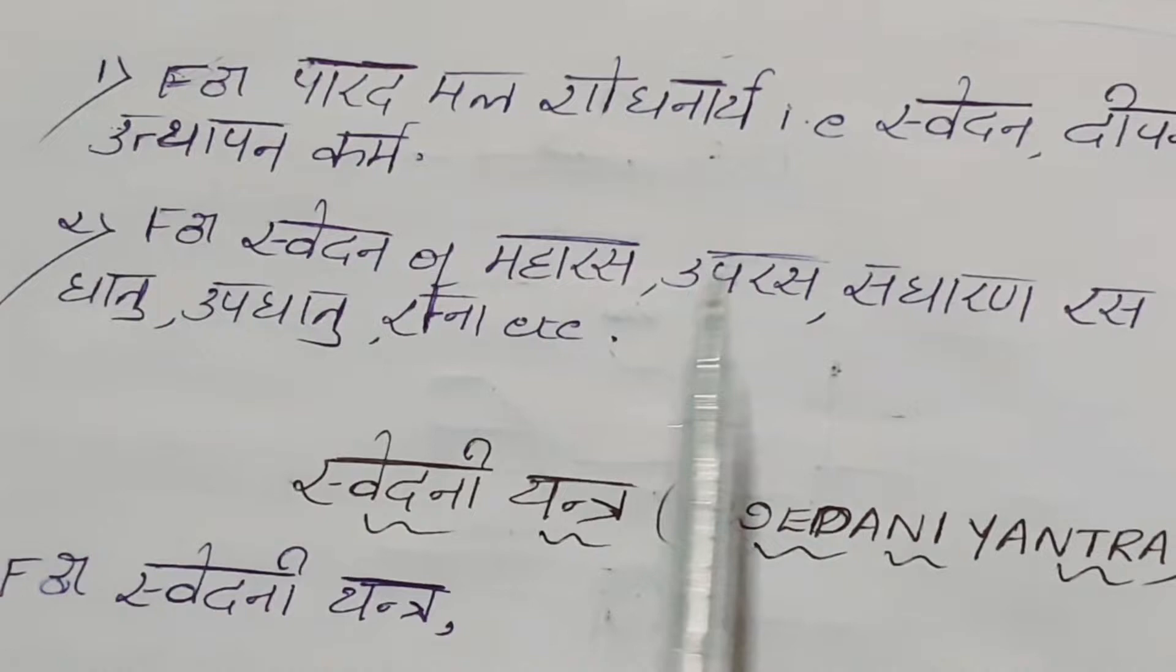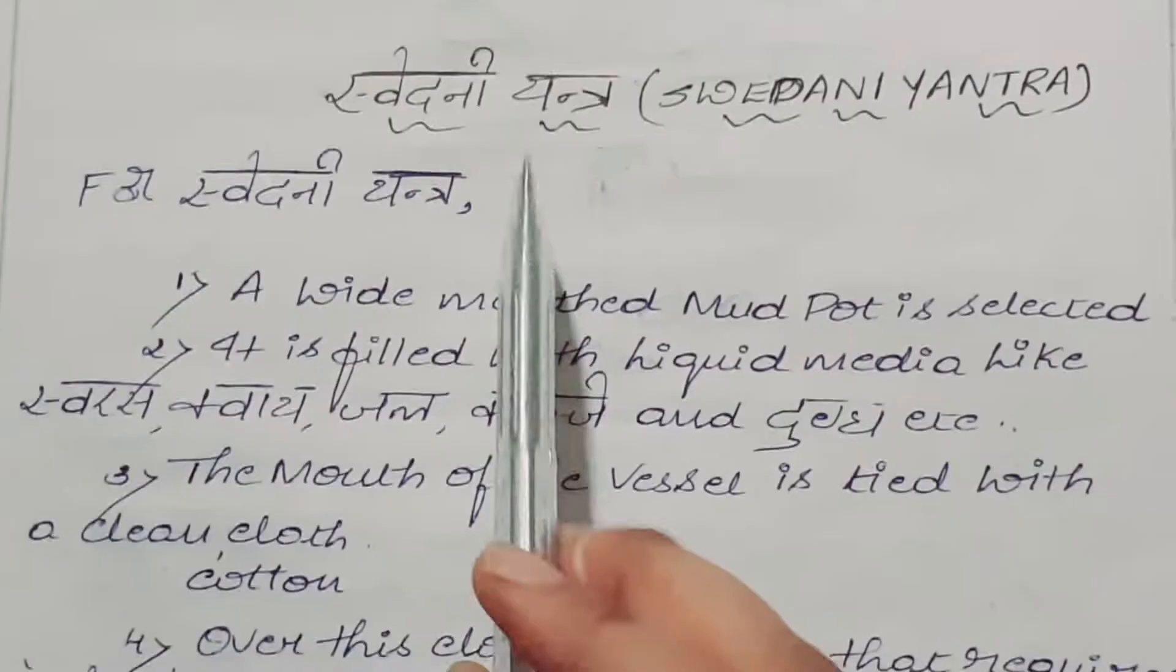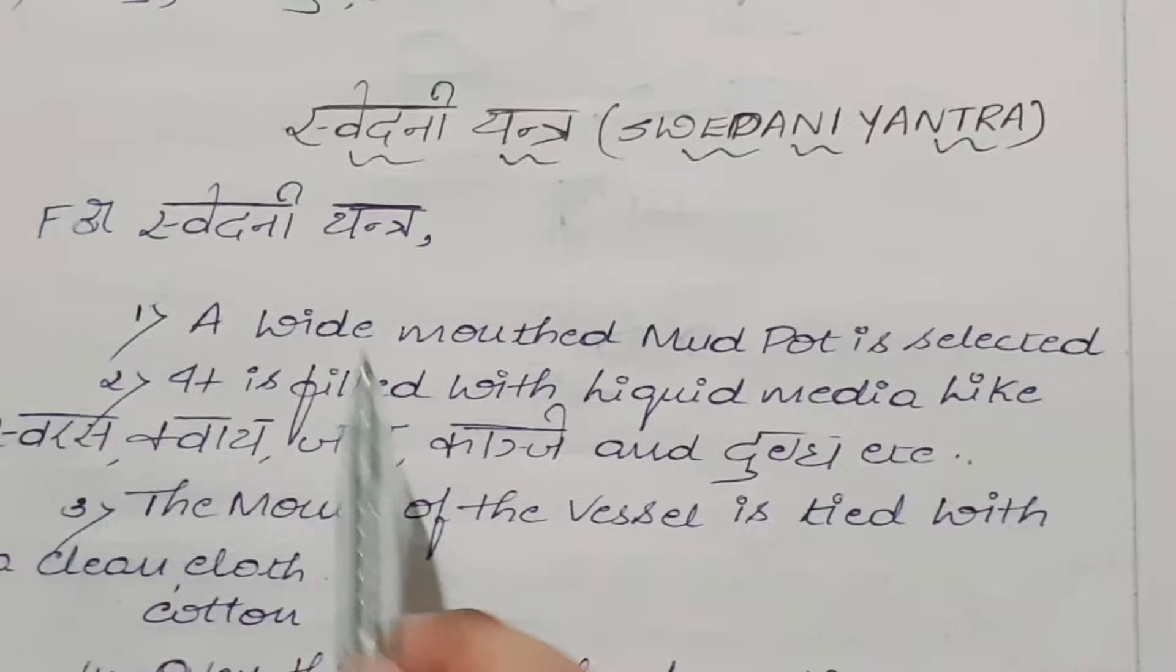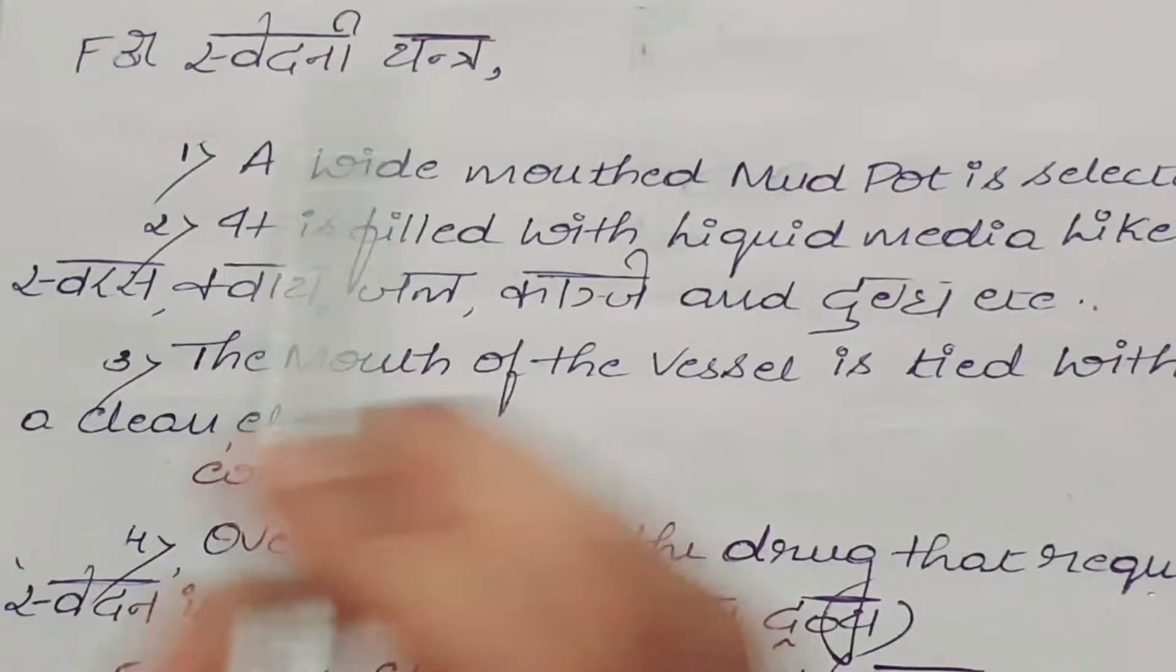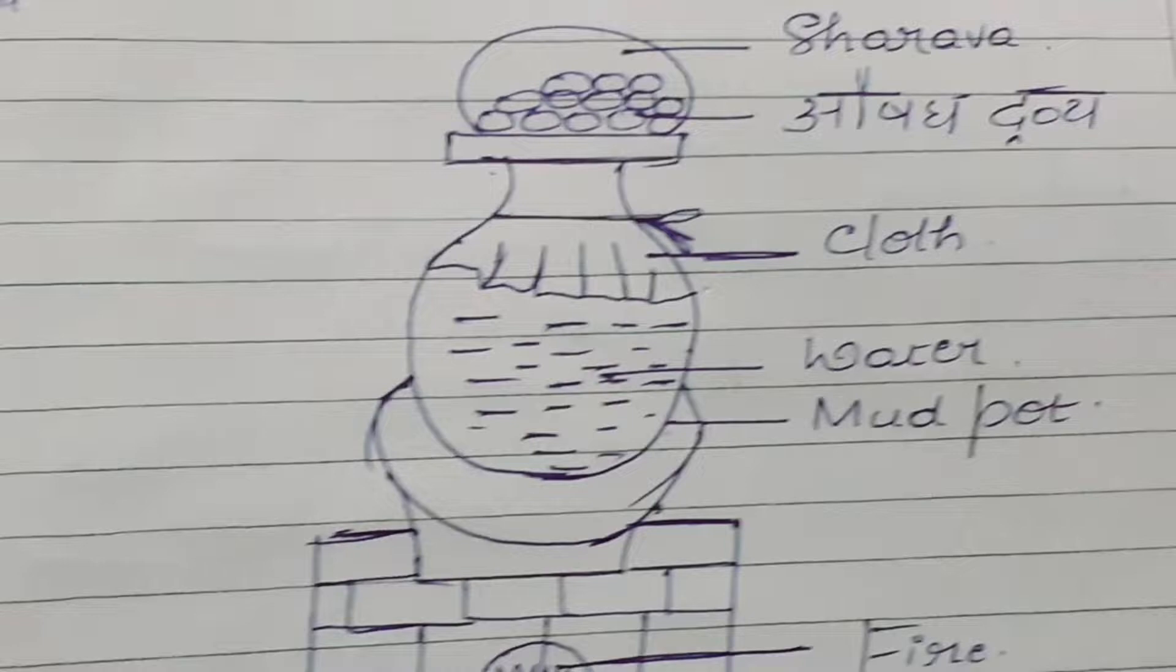Now coming to Swedani Yantra. For Swedani Yantra, a wide-mouthed pot is being selected. It is filled with liquid media like swarasa, kwatha, jala, kanji, and godabda, etc. The mouth of the vessel is tied with the clean cotton cloth.